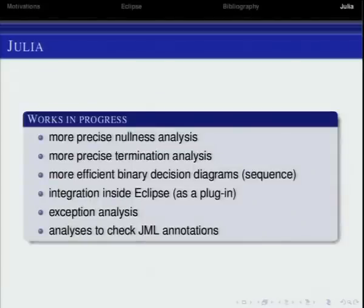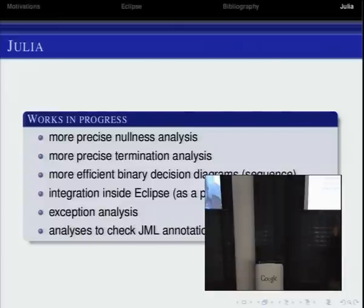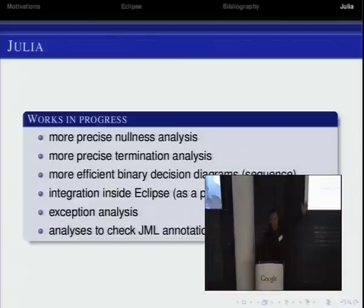We are improving the precision and efficiency of termination analysis, and the dream is to create a plugin usable inside Eclipse, at least for nullness analysis. I want to ask you: what do you need when you program? Suggestions include C++ support — which may be too much at the moment but we can approximate. Maybe information about exceptions each method can throw, even unchecked exceptions, or checking annotations like modified fields or pure methods.